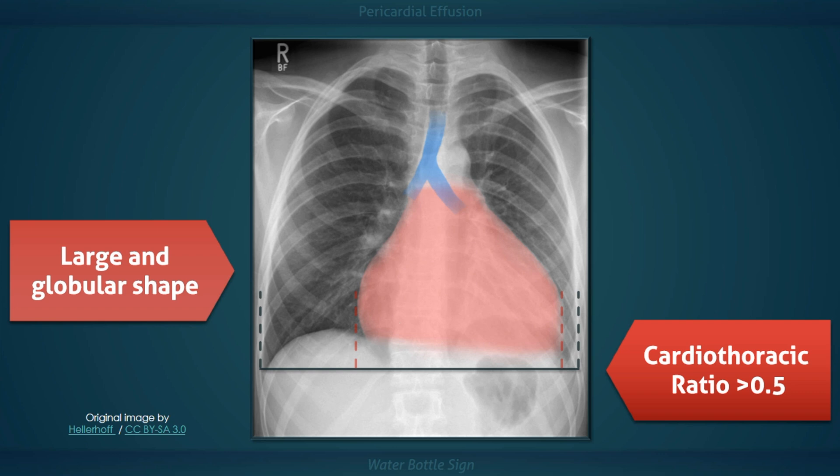This appearance can occur if the x-ray was performed while the patient was rotated to the right. Additionally, encroachment of the engorged pericardial sac on the lower airway can also push the carina away from the midline.